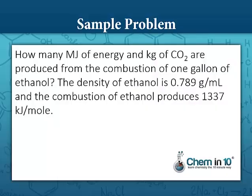Here's our sample problem. How many megajoules of energy — it's megajoules because of the capital M — and kilograms of carbon dioxide are produced from the combustion of one gallon of ethanol? The density of ethanol is 0.789 grams per milliliter and the combustion of ethanol produces 1,337 kilojoules per mole.